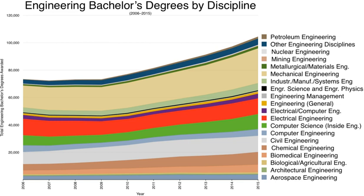The engineering profession in Hong Kong has 21 engineering disciplines, namely aircraft, biomedical, building, building services, chemical, civil, control automation and instrumentation, electrical, electronics, energy, environmental, fire, gas, geotechnical, information, logistics and transportation, manufacturing and industrial, marine and naval architecture, materials, mechanical, and structural engineering.